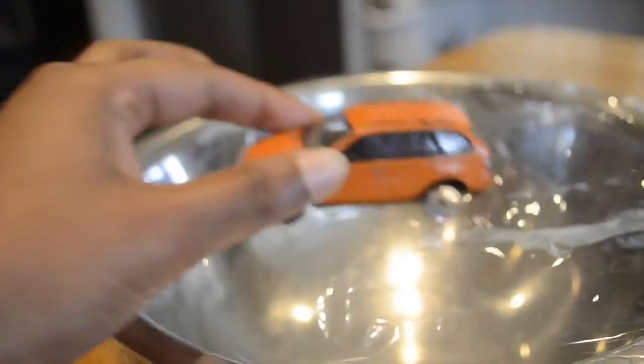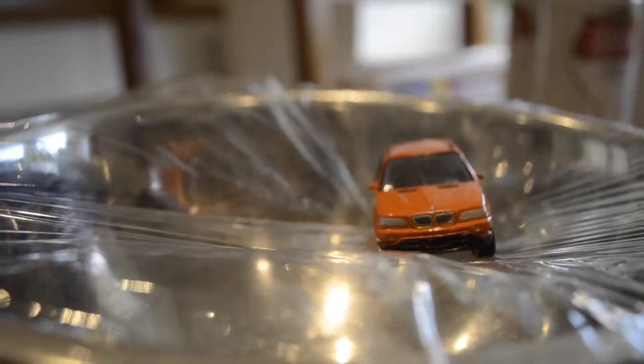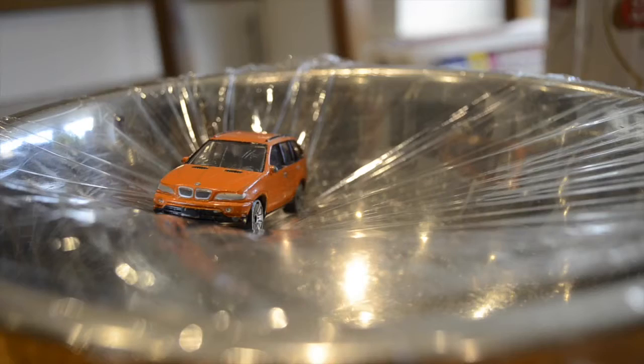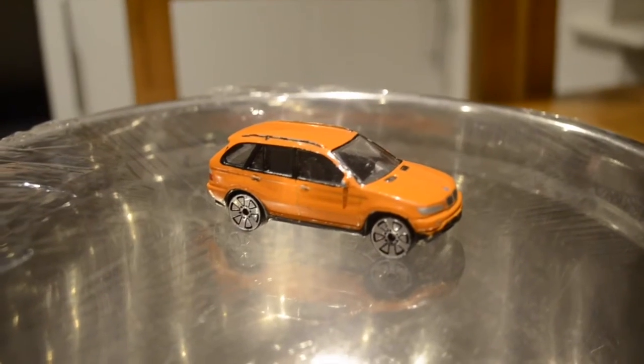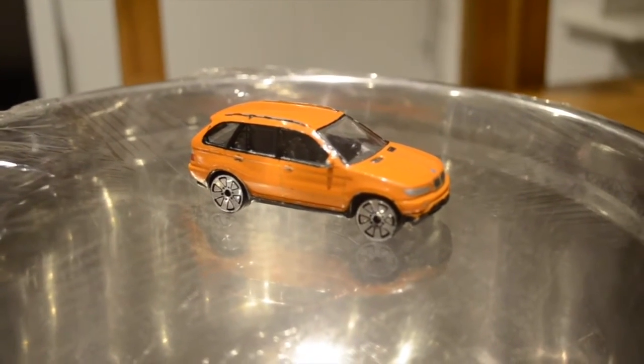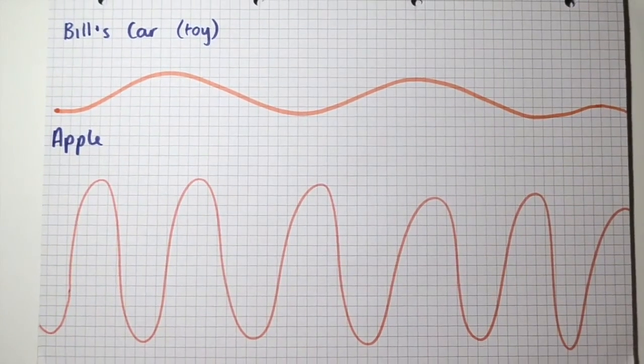Wait, what? All objects with mass, including the car, distort space-time. As the car's position changes, the position of the distortion also changes, creating an oscillating effect, almost like a wave. Of course, Bill's car is producing undetectable waves because the mass is just so small, but the principle still stands. The bigger the mass and the larger the acceleration, the larger the waves.